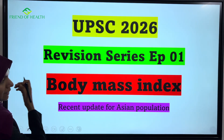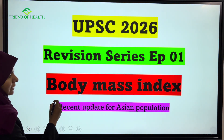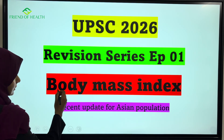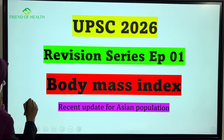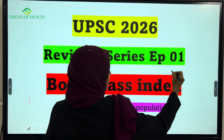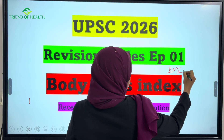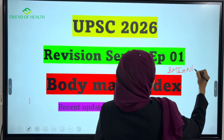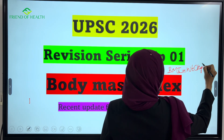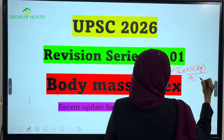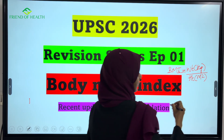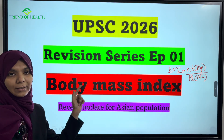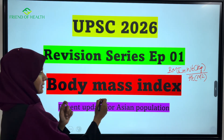BMI has been asked in various competitive exams like UPSC, IPG, etc. I will also include a recent update on the Asian population. BMI, or Body Mass Index, is calculated using the formula: weight in kg divided by height in meter square. An important MCQ point is that BMI is not a diagnostic tool — it is a screening tool.